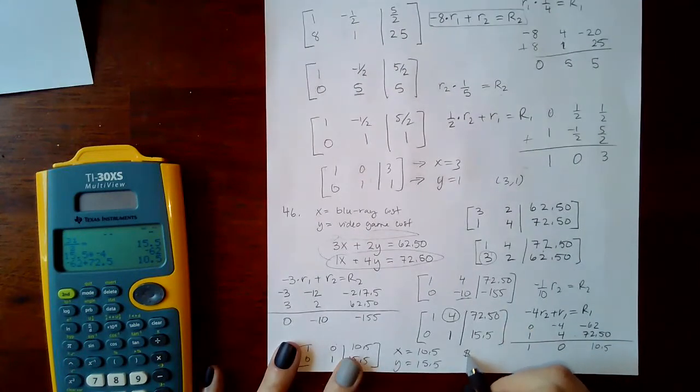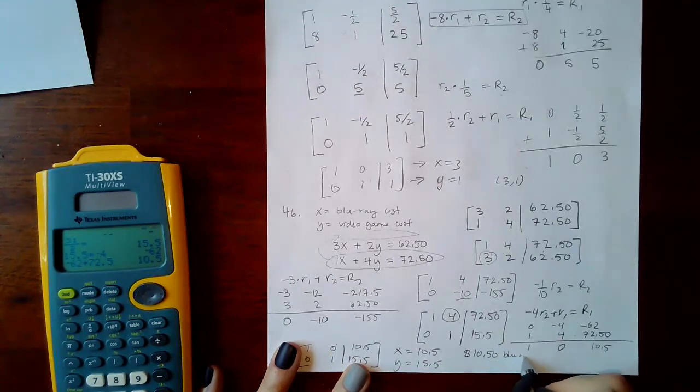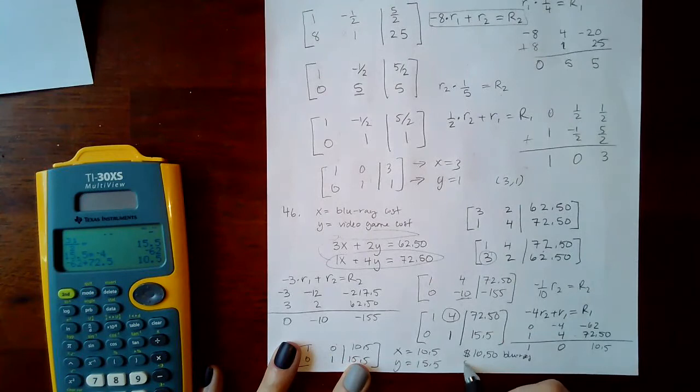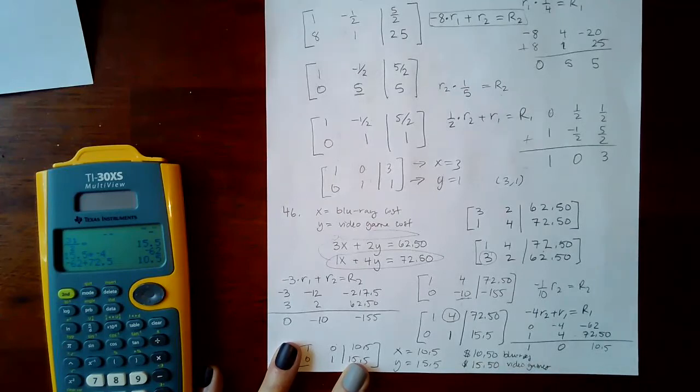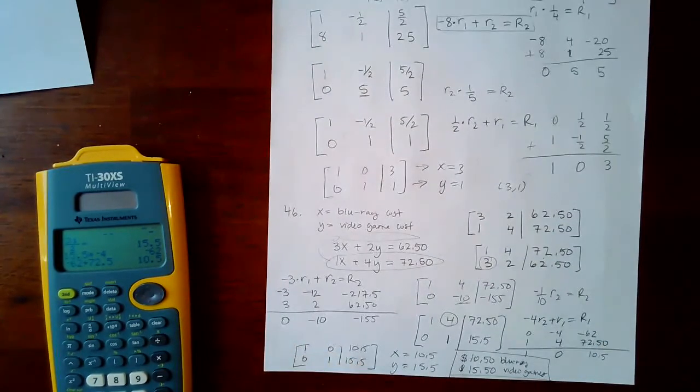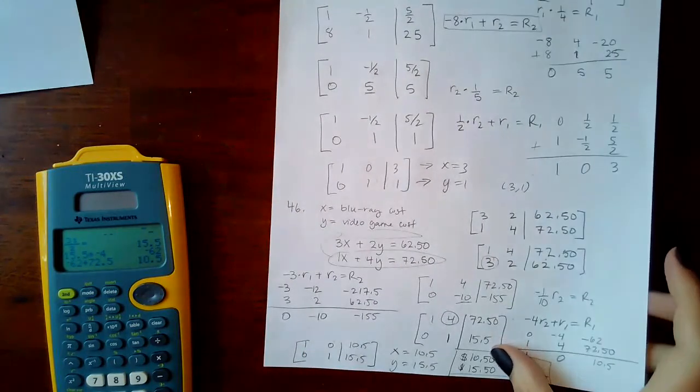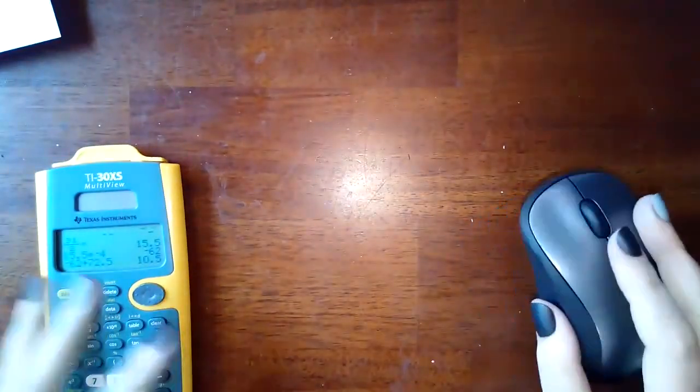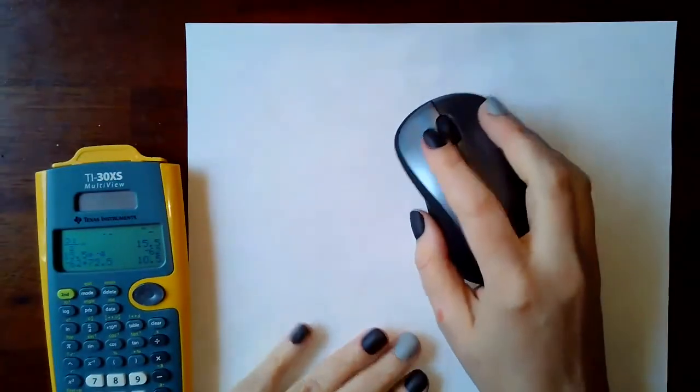Well, remember this is cost. So what that means is that the blu-ray cost $10.50, and the video games cost $15.50. That does match what they have in the back, so that is the correct answer. Make sure that you convert your word problem into a system and then just solve the system like you normally do. That is finally the end. Good luck on your final exam.